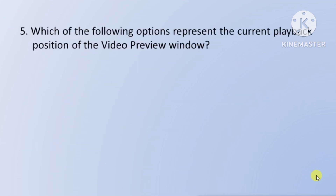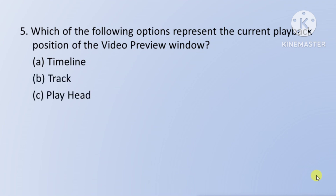Next question: which of the following options represent the current playback position of the video preview window — means nimnlikhit mein se koun sa option video preview window ke current playback position ko represent karta hai? Option A: Timeline. Option B: Track. Option C: Playhead. The right answer is Option C: Playhead.